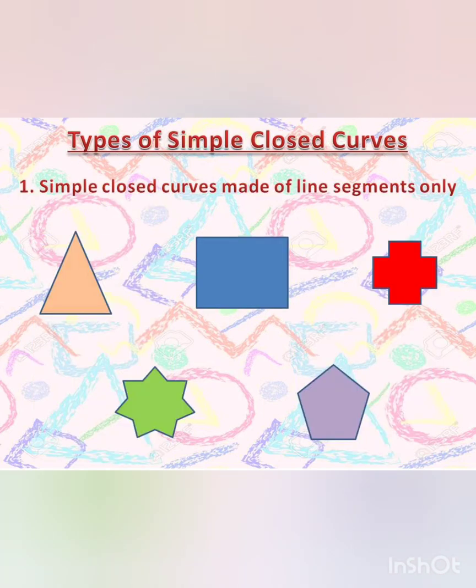Now there are various types of simple closed curves. The first one is simple closed curves made of line segments only. As you can observe in the given examples, these figures are made up of only straight line segments and the boundaries do not cross each other.